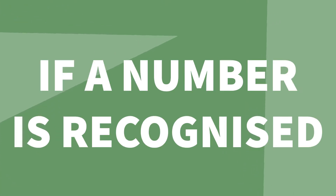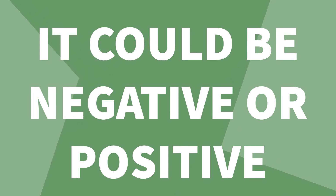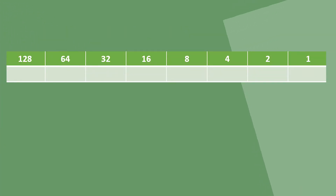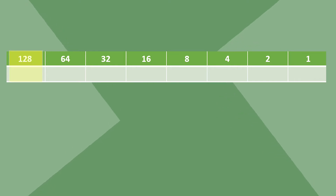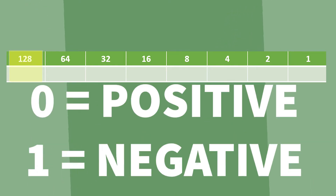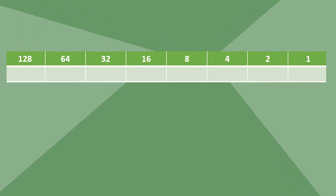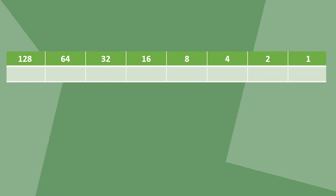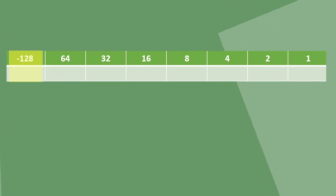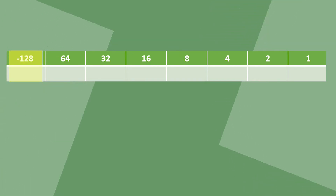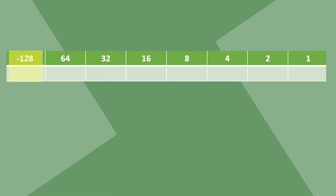If a number is recognised as a signed binary number, it means it could be negative or positive. We can tell which one it is based on the left-most bit — that's this one here. If it's a zero, the number is positive, but if it's one, the number is negative. This is because in a signed binary number, the left-most bit has a negative value. So in this 8-bit number, that's not 128, it's minus 128.